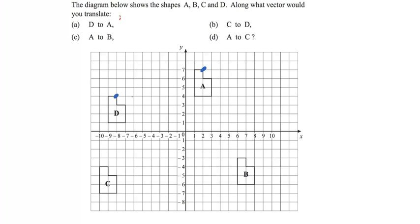So let's count. So one, two, three, four, five, six, seven, eight, nine, ten. We've gone ten to the right. One, two, three up. So it's going to be ten, three. There is our movement from D to A.